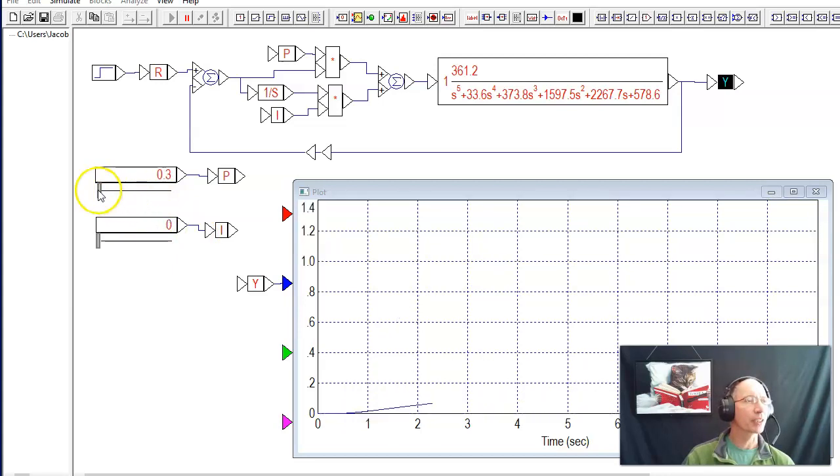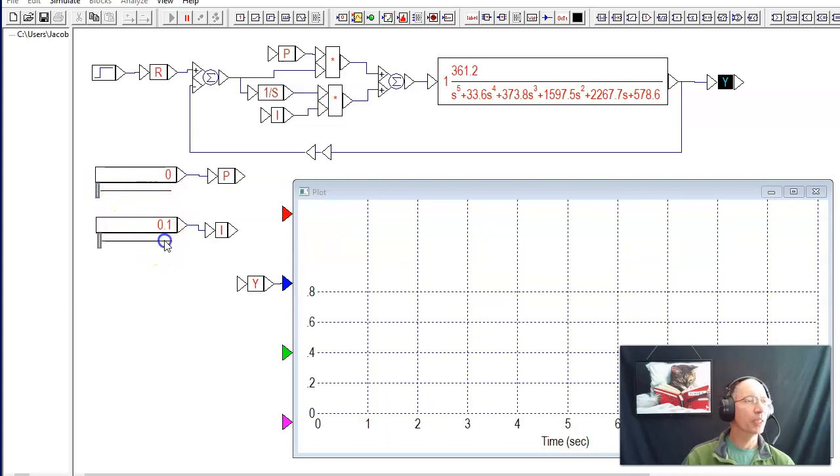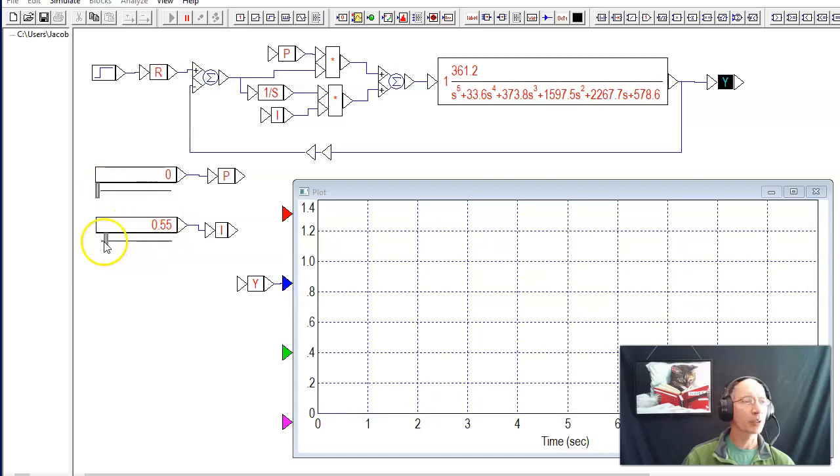I want to do an I compensator, get rid of P, increase I until I get about 20% overshoot, and it's right around there. Notice this is a really, really slow system. That's one knob.